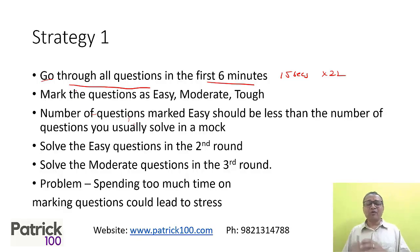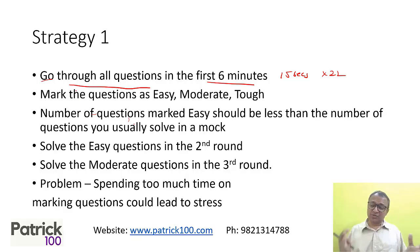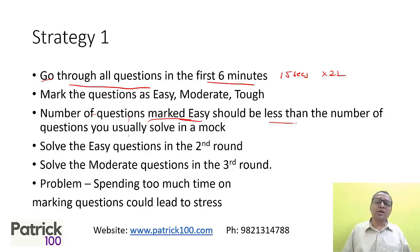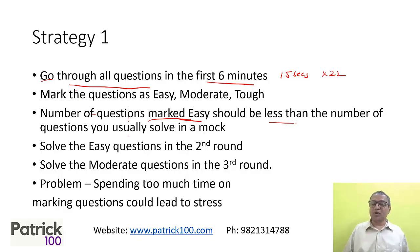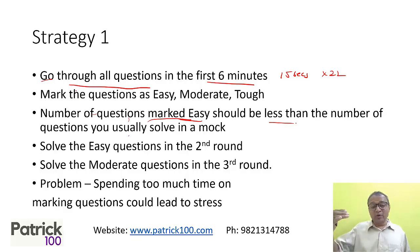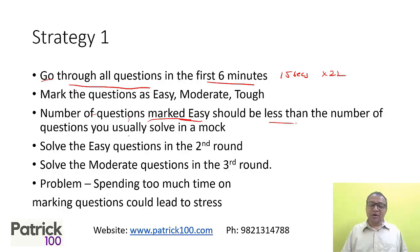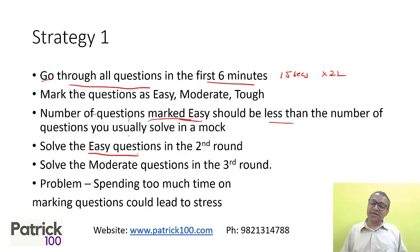This is a good strategy for people who solve fewer questions, and also for people who solve more questions but find it difficult to leave questions. Also understand that the number of questions you mark as easy should be less than the number of questions you normally solve. If you solve four questions, you can't mark six as easy. In the second round, solve the easy questions, and in the third round, solve the moderate level questions. When solving easy questions, there's a chance a question is actually tough even though you marked it easy — learn to leave such questions. Don't get stuck on a question.